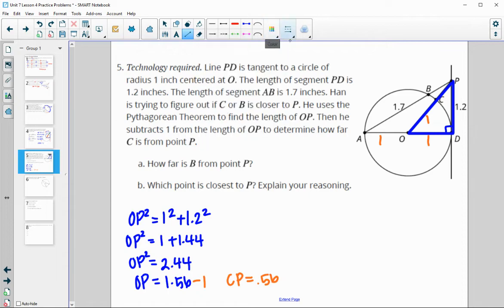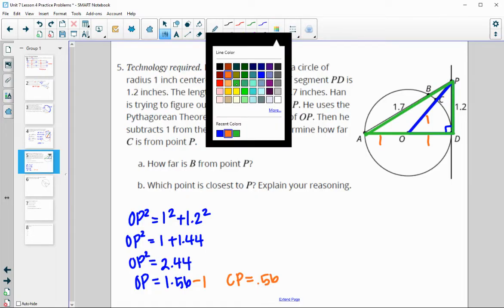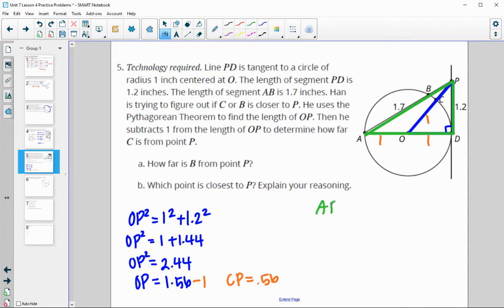Then we're going to need to repeat this process with this larger triangle here so we can figure out how far B is from P. So for this one, we'll find AP first. So AP squared is equal to this leg, which is now the diameter, so it's 2 squared, plus the 1.2 squared. So AP squared is equal to 4 plus 1.44. So AP squared is equal to 5.44. So then, again, we will square root that to get that AP is equal to 2.33.